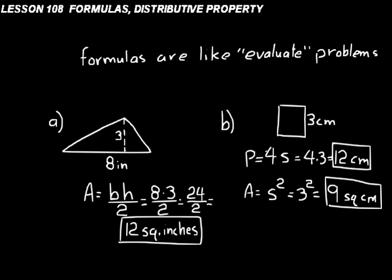Formulas are like evaluate problems — just substitute the numbers in for the letters. Make sure you know what the letters stand for. For rectangles, you usually have L for length and W for width. For squares, you have S for a side — all the sides are the same, so you just call them all S. For triangles, B is for the base and H is for the height perpendicular to the base — how tall the triangle is.